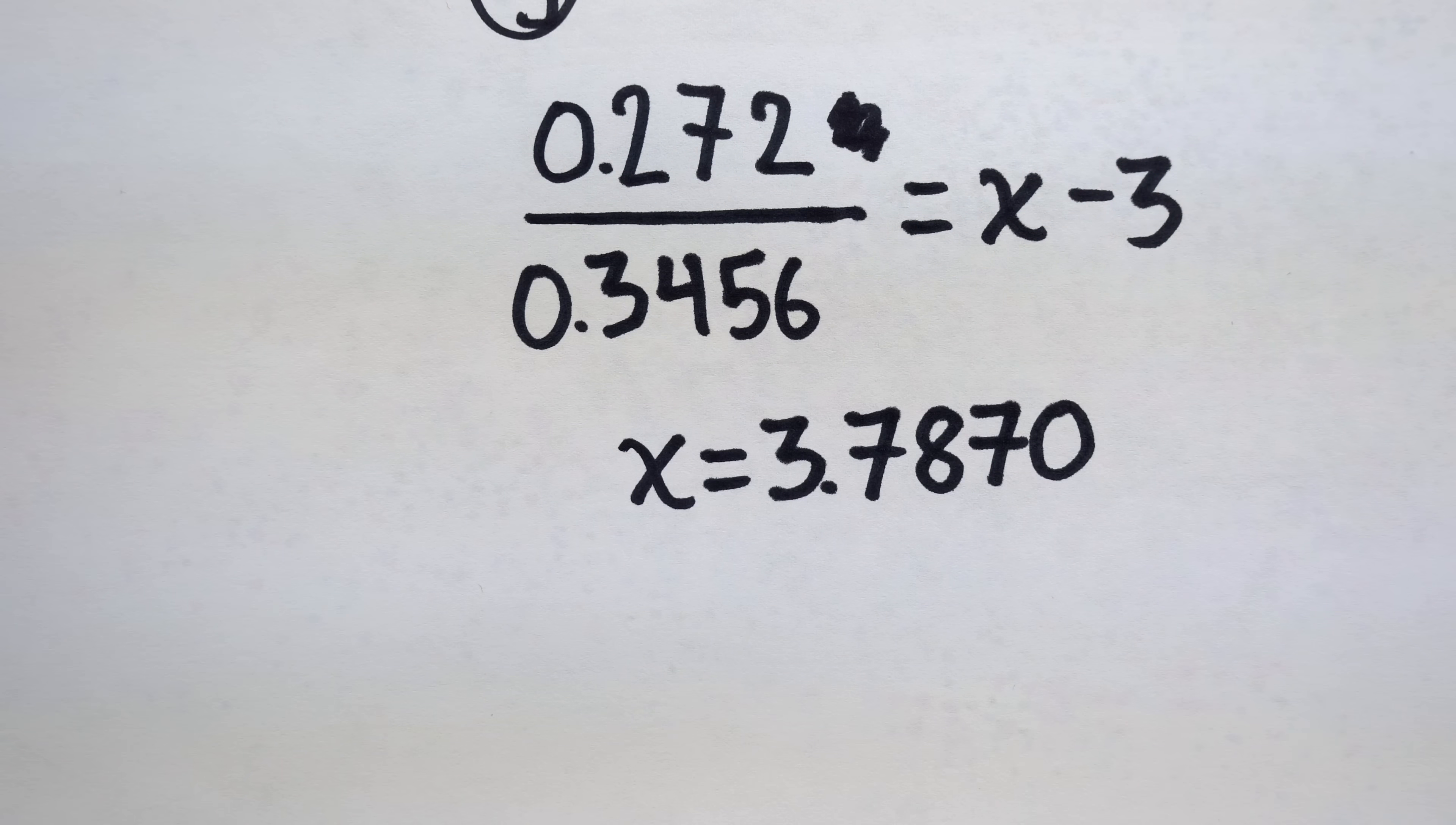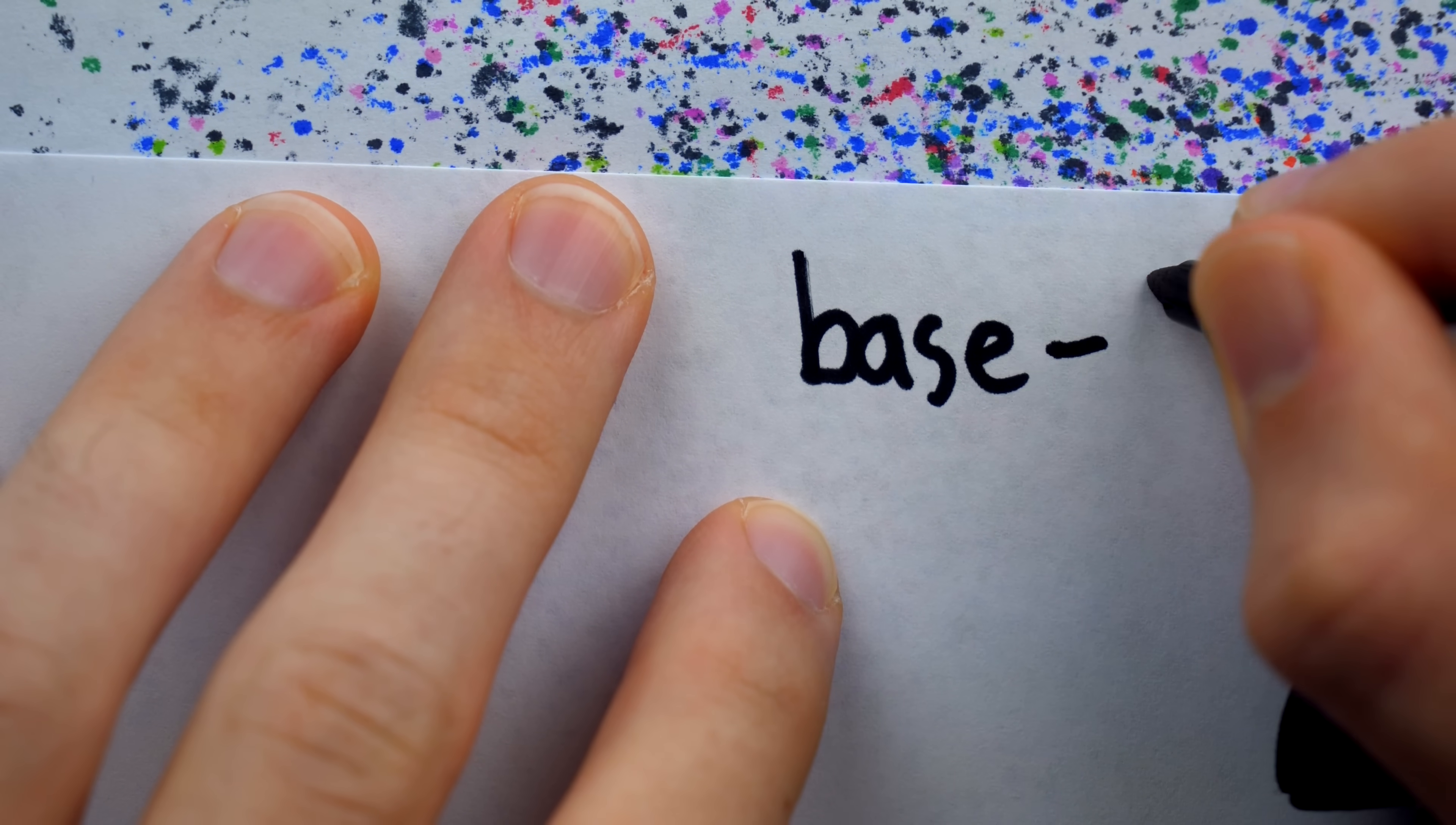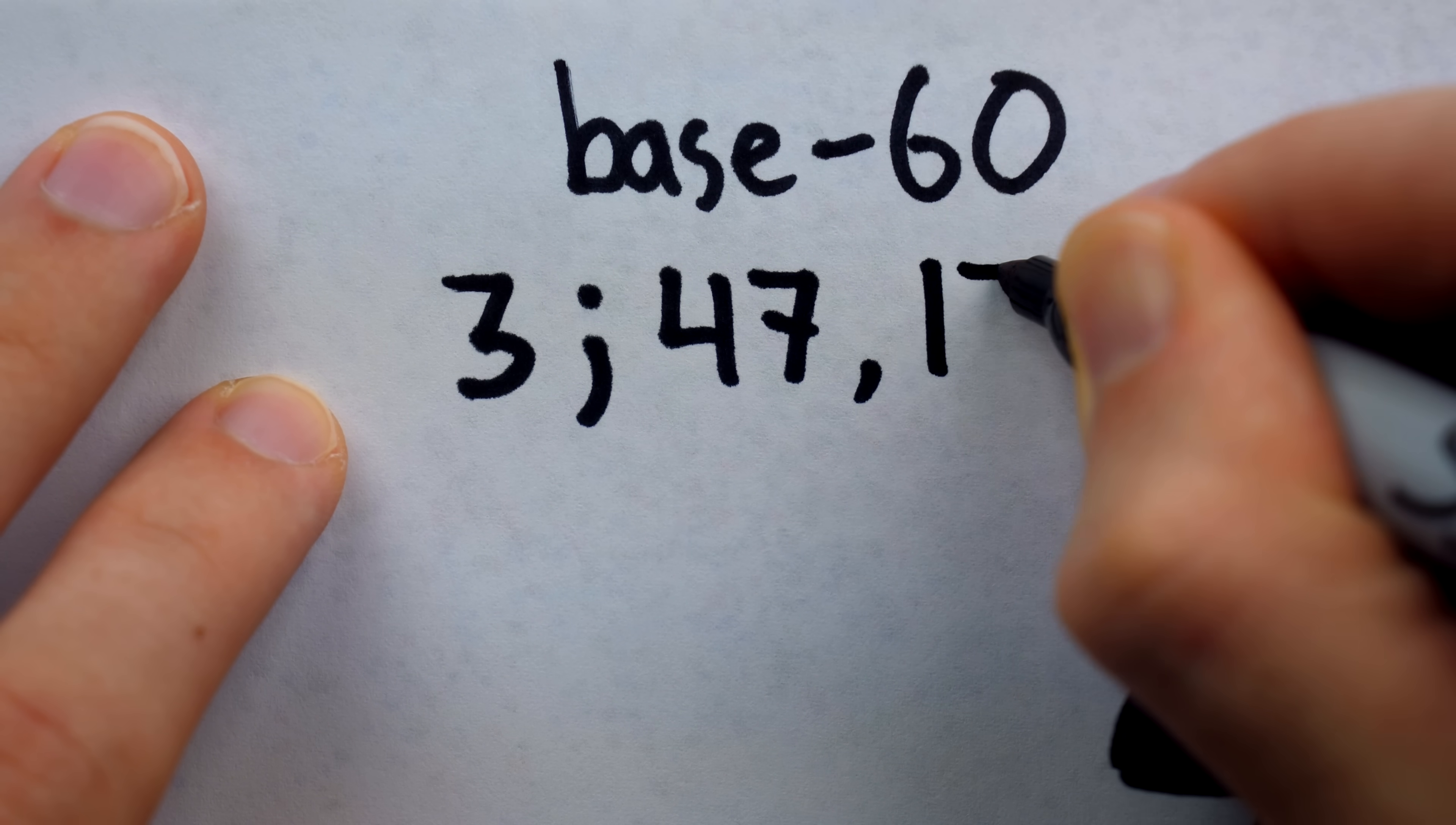As a final note, it's worth mentioning how this answer was actually expressed on the clay tablet. Like we mentioned earlier, the Babylonians used a base 60 or sexagesimal number system. So on the tablet, the answer is given as 3, 47, 13, 20.